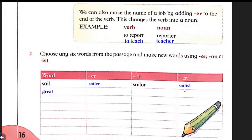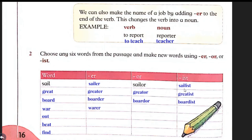I choose: great, board, war, out, beat, and fight. You can choose any other word. Now by adding the correct suffix with each of my words in the correct column, I am making new words. These words can be regular or can be irregular — don't worry about it, just make new words.